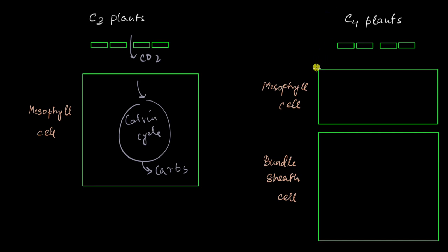Now what happens that is so special in C4 plants? Again through the stomata the carbon dioxide enters and inside the mesophyll cells it enters not the Calvin cycle but what is called the C4 cycle.